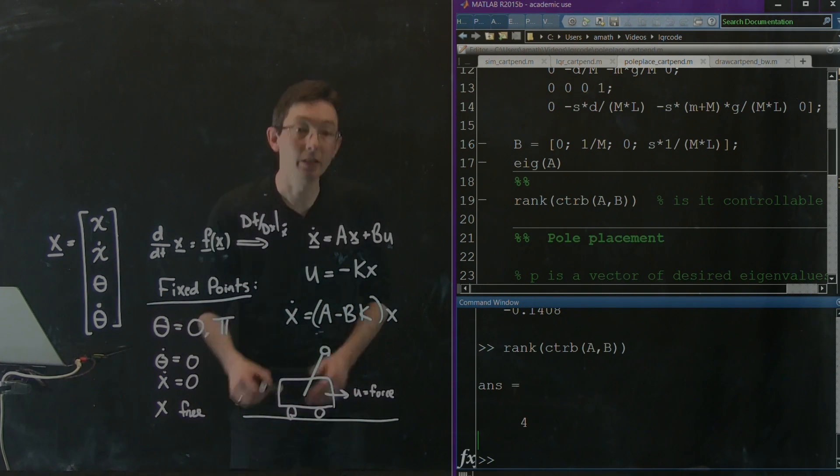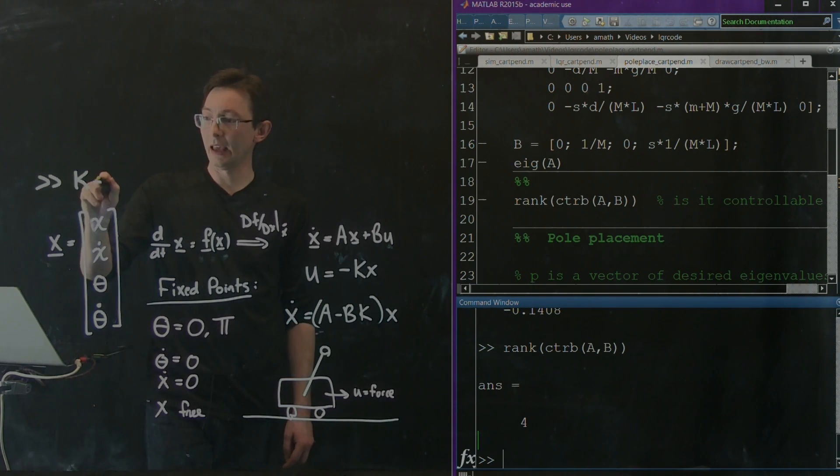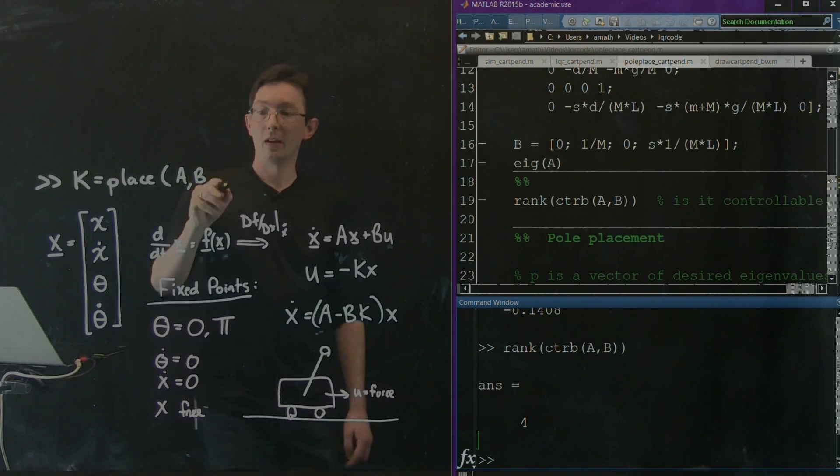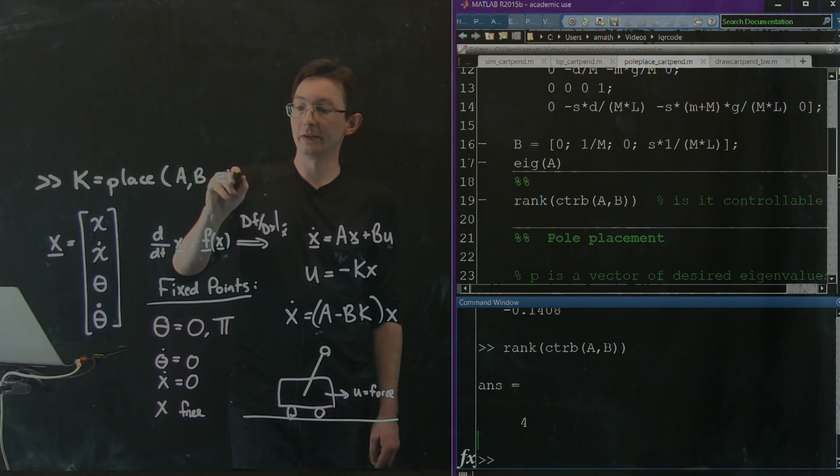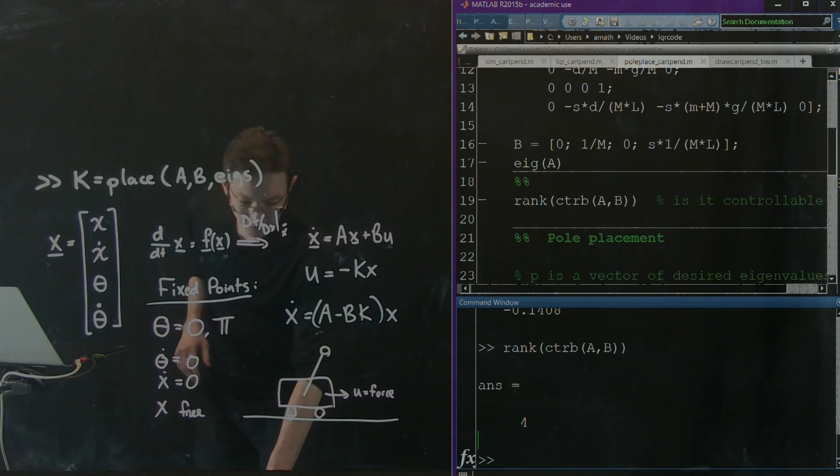And so now what we're going to use is the place command in MATLAB. So we're literally going to say k equals place and we're going to give it A, B, and we're going to give it a vector of desired eigenvalues, eigs. Okay? And so let's do this.